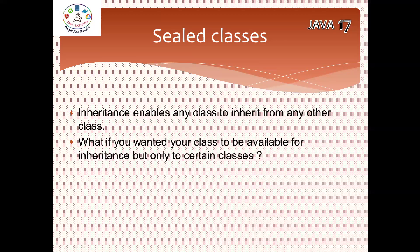But with sealed classes, I want to control who can access my class. Inheritance enables any class to inherit from anyone. If you want to restrict it and don't want anyone to use your class, we define it as final — everyone knows that. But what if you want your class to be available for inheritance only for certain classes?